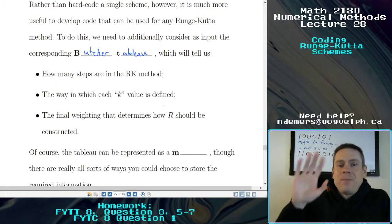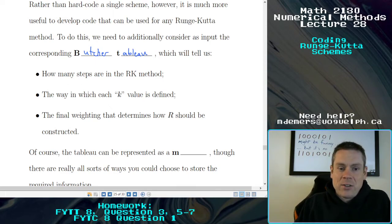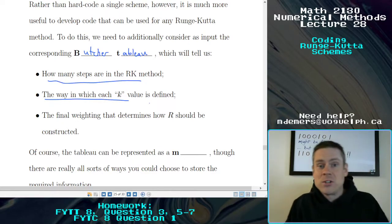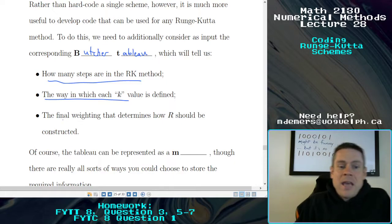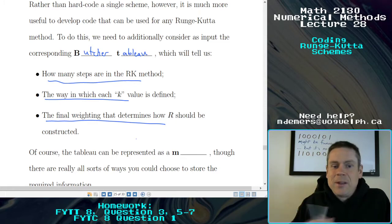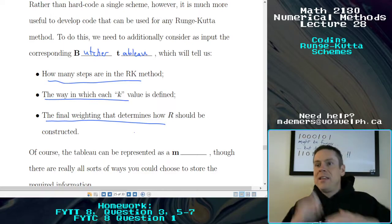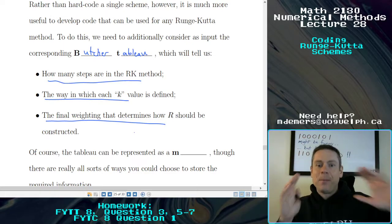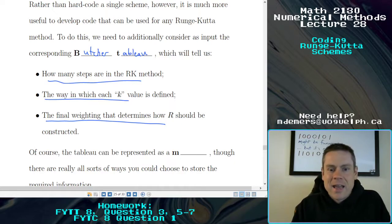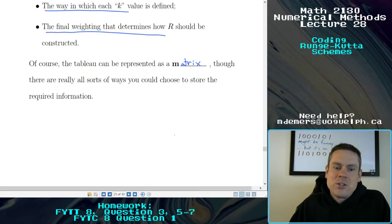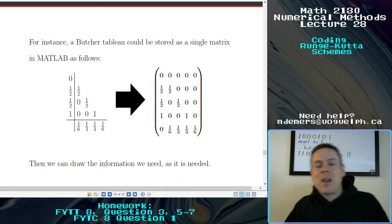So, right, that tableau is going to tell us a few things. It's going to tell us the way in which each k value is defined. It gives us how many steps are in the method, which is something that is a piece of information we're going to know. And that final weighting that determines how R should be constructed. So those different elements need to be there. You might wonder how the heck to do this generally. But given the layout in that tableau, well, it looks a lot like it has a matrix sort of form. And we can represent it that way. We just have to know how to read that matrix. You could store the information in all kinds of ways. But here's the way that I've chosen to do it.